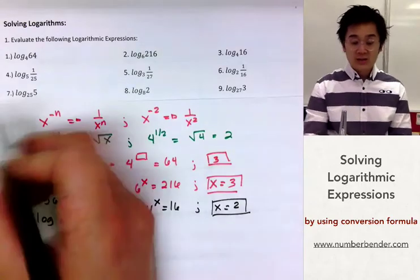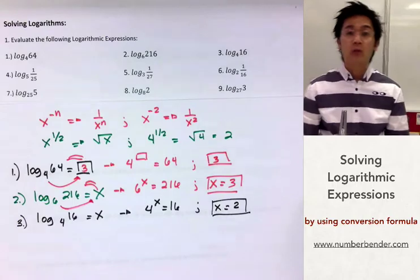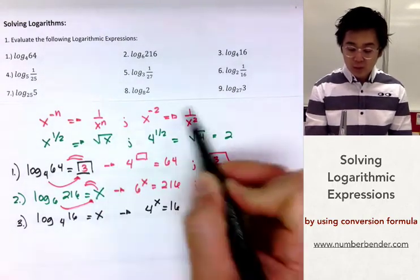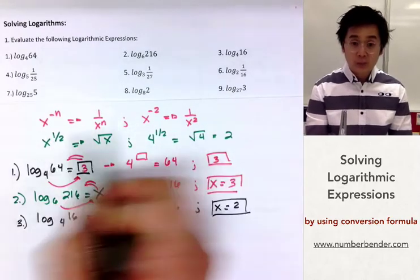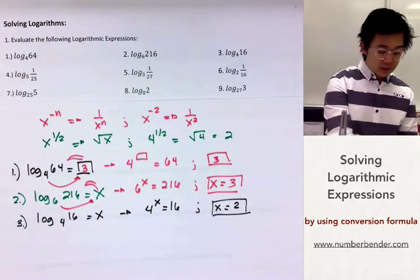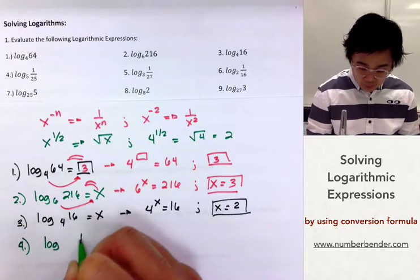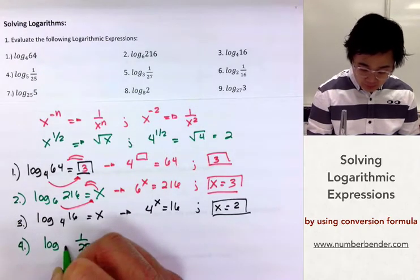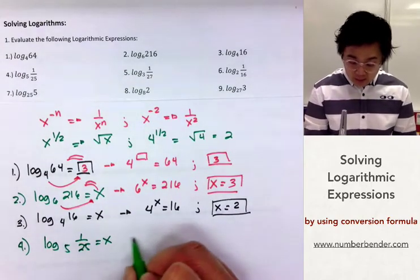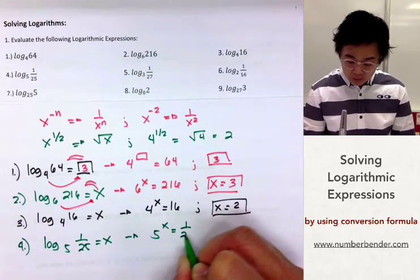Now let's answer the next set of problems. You'll notice we have fractions in our logarithms, and we'll be using the negative exponent law for problems 4 to 6. Starting with number 4: logarithm of 1 over 25, base 5. Equating to x and converting gives us 5 raised to x equal to 1 over 25.